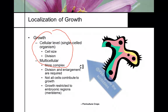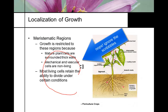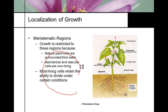If you are a single-celled organism, growth is only increases in cell size and cell division. Multicellular organisms are much more complex — they have division and cell enlargement. Not all cells contribute to growth, and growth in plant tissue is restricted to what we call an embryonic region. In plants, all growth is restricted to meristems because mature tissue is locked in place by cell walls.